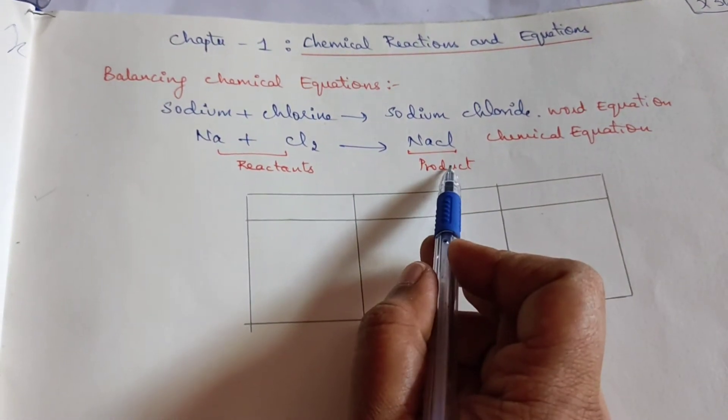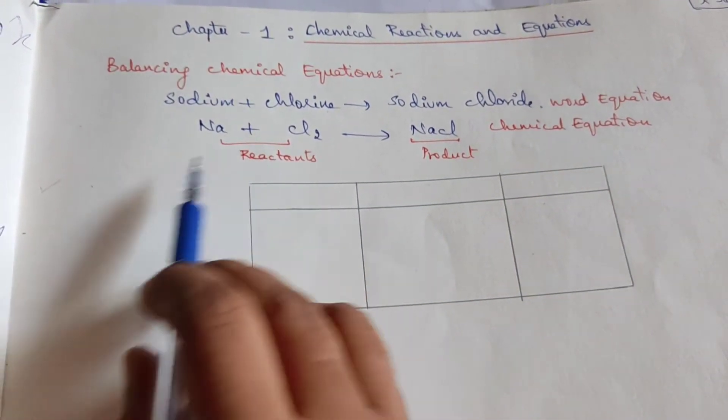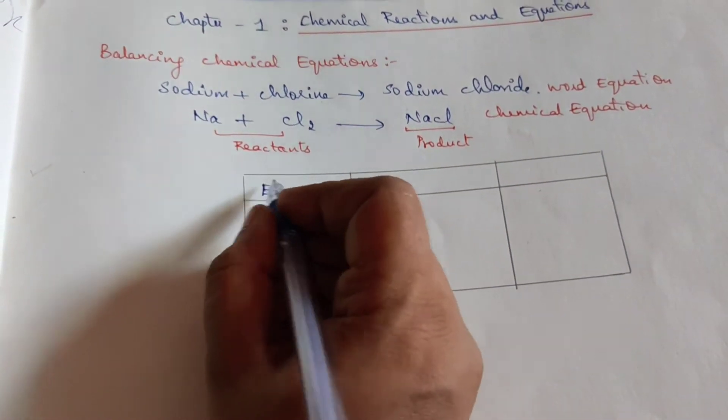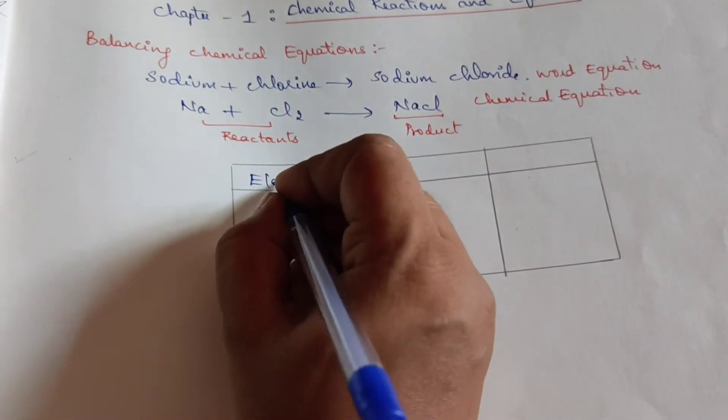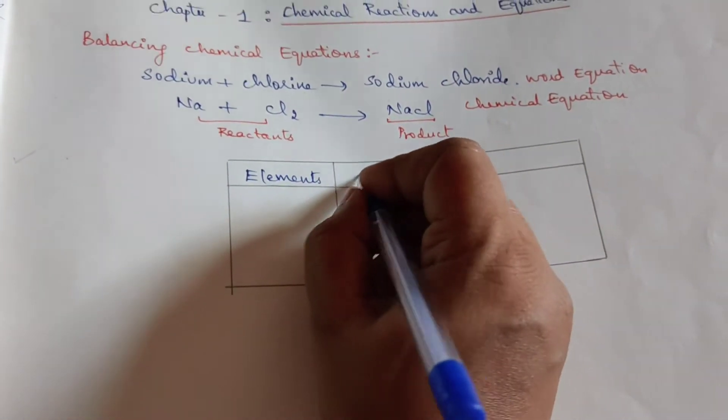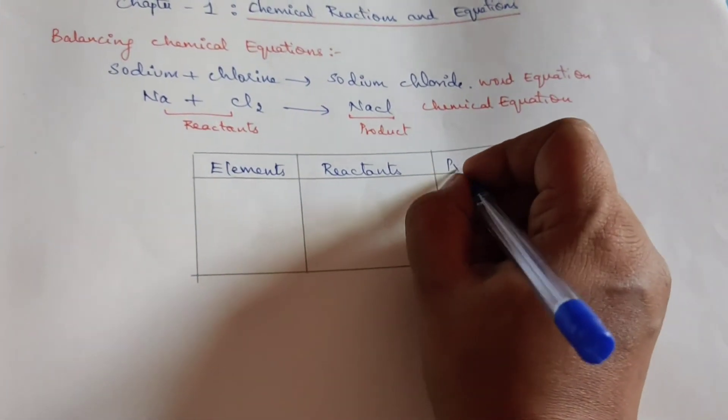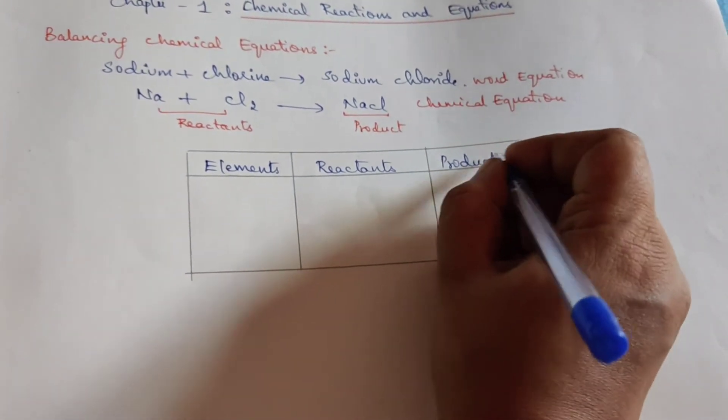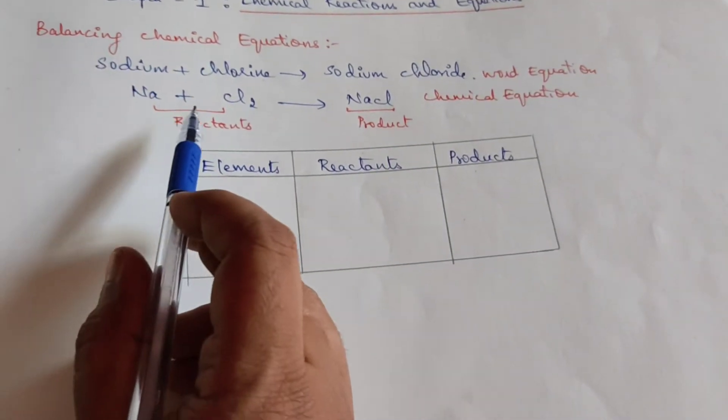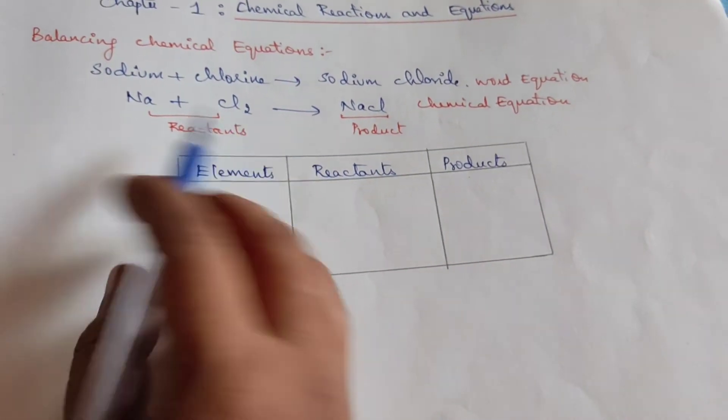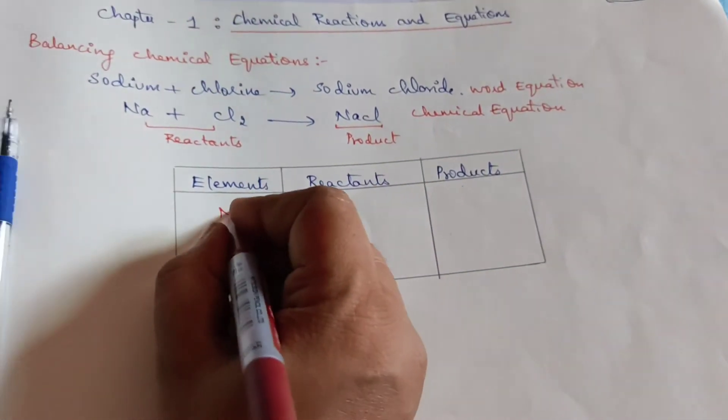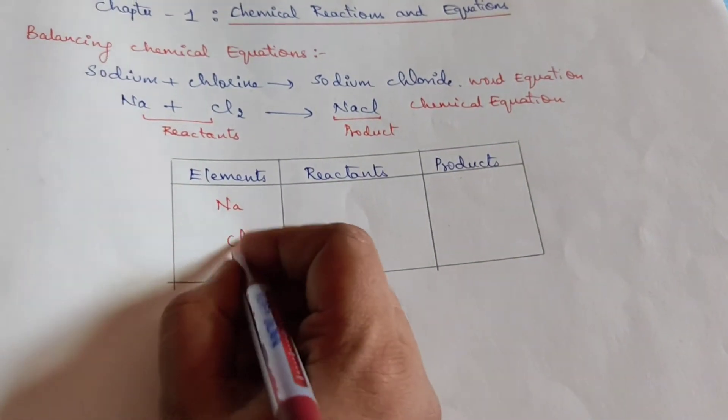On my right-hand side is product, on my left-hand side is reactants. Hence we make a tabular column like this and write elements, reactants, and products. How many elements do you basically see? There are basically two elements: we have sodium and chlorine.